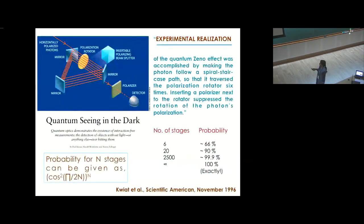Similar experiments have been carried out by Kwiat and others. The experimental realization of the quantum Zeno effect was accomplished by making the photon follow a spiral staircase path, so that it travels the polarization rotator six times. This is the rotator. And then inserting a polarizer next to the rotator - this insertable polarizing beam splitter. Inserting that next to the rotator suppresses the rotation of the photon's polarization. The probability again here goes as cosine square law. If I have six such stages, then the probability is 66%. If I increase such stages, for example for 2500, then the probability is 99.9%. And for infinite, it's 100%.